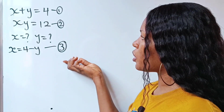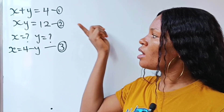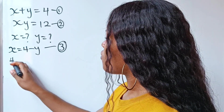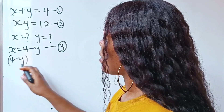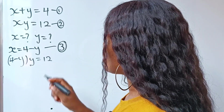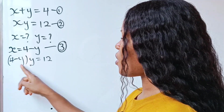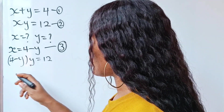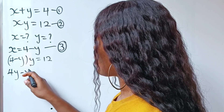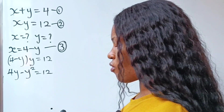Now let's substitute equation 3 into equation 2. If we do that, we will have that (4 minus y) multiplied by y is equal to 12. Now let's open this bracket: 4 times y gives us 4y, minus y times y gives us y squared, is equal to 12.